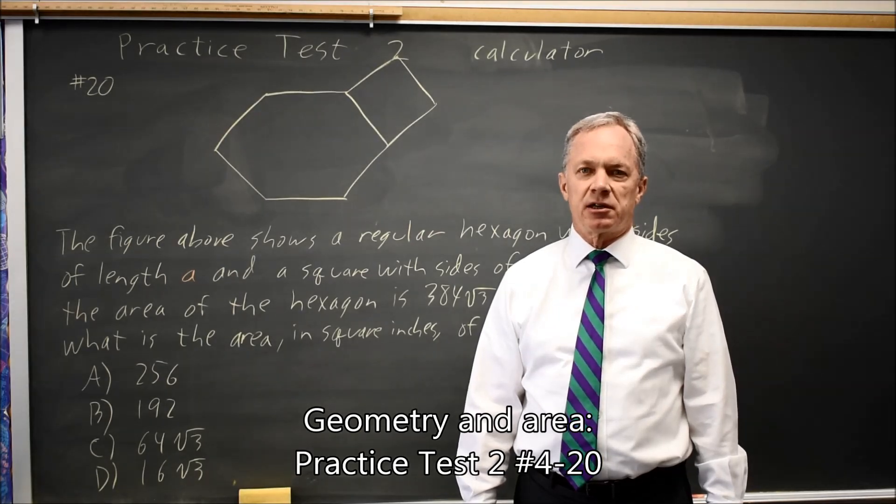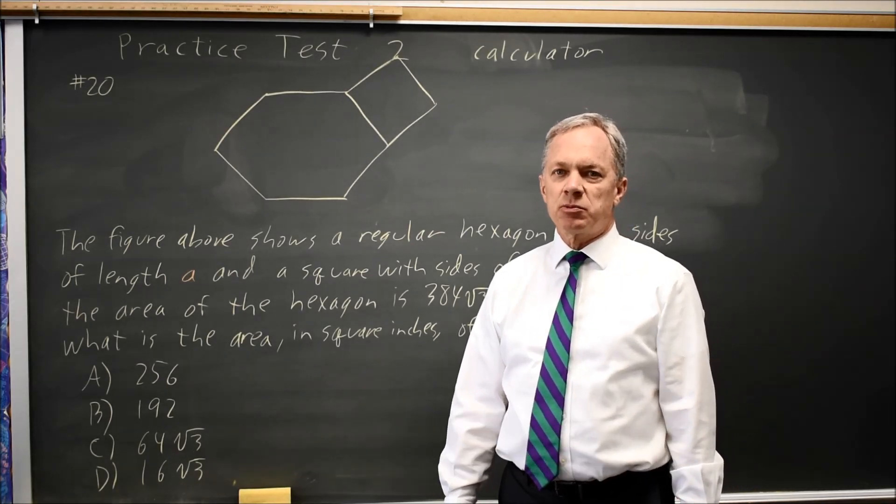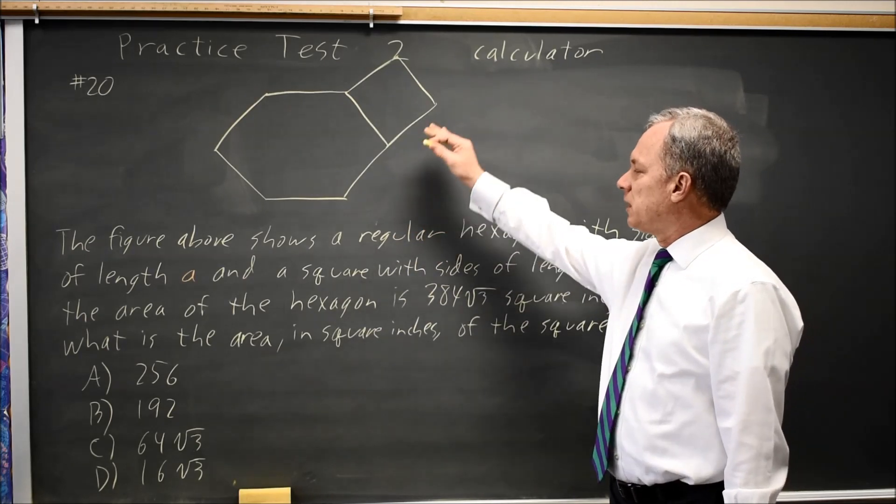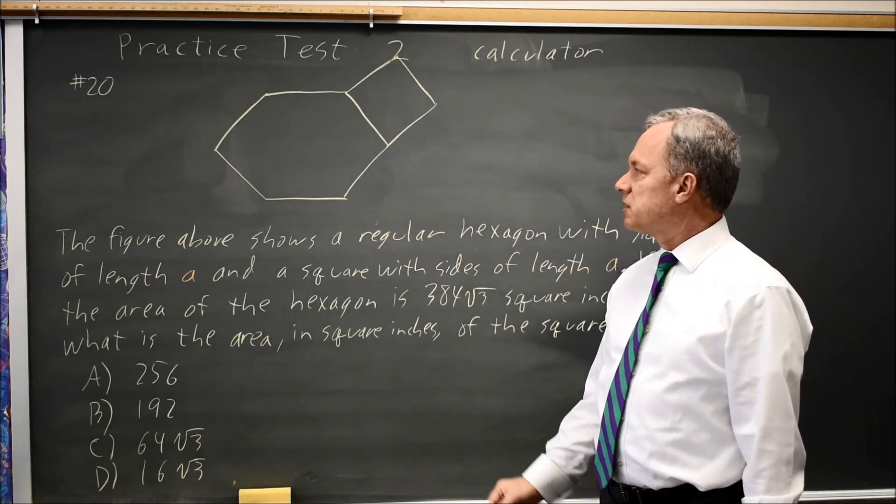This is SAT Test 2, Calculator Question Number 20. College Board gives us a regular hexagon and a square with sides of length A.